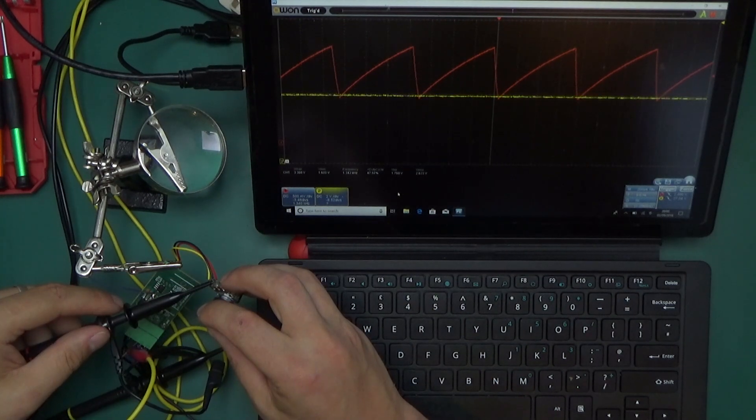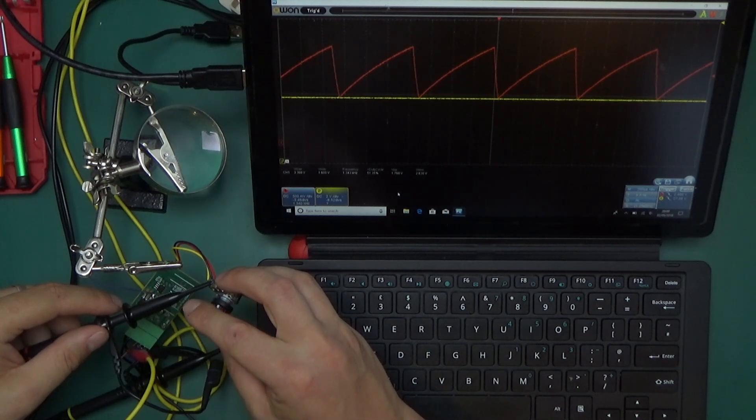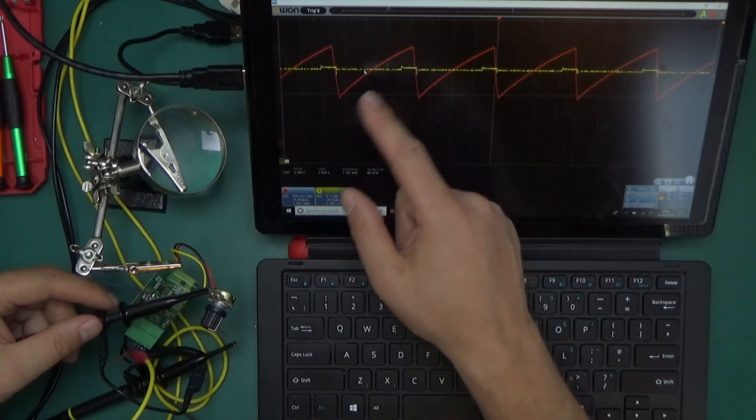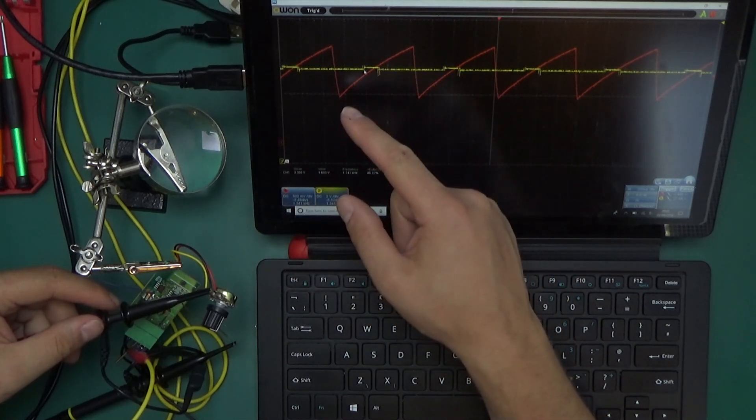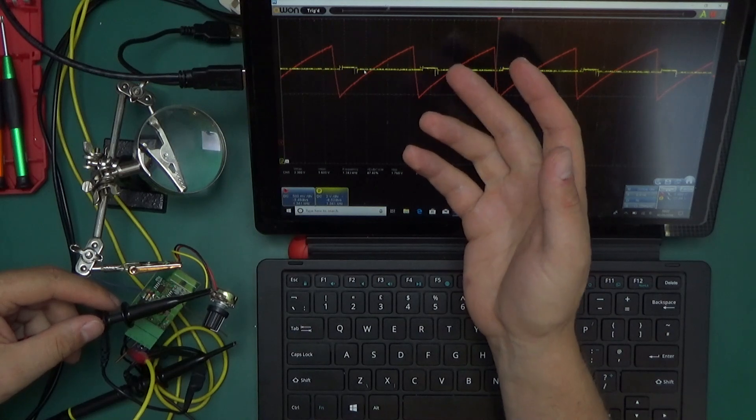The LM358, it compares those two voltages and depending on which one is higher, because it works like a comparator, it will put the output high or low.